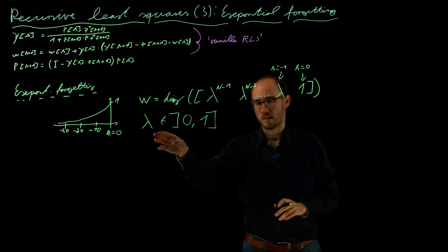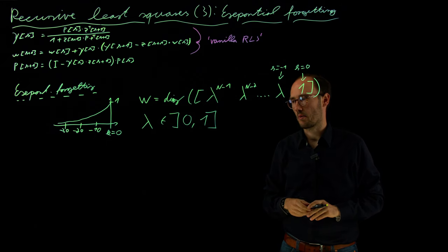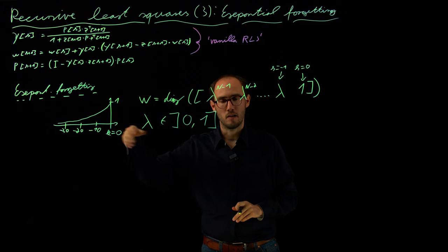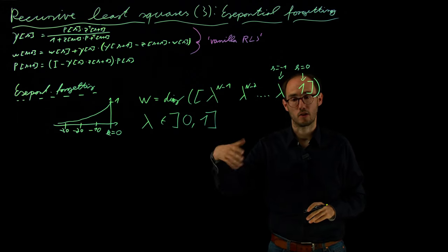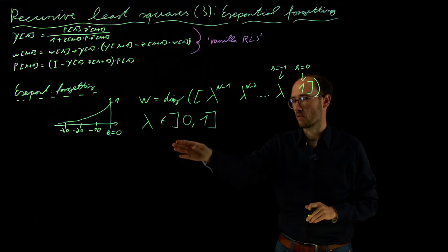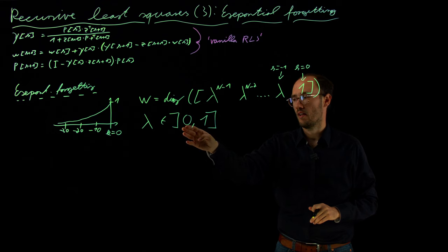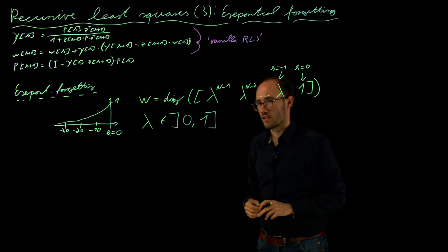And conversely, if lambda is very close to 0, that would mean that this is decaying quite quickly and that would mean that previous data samples become much more irrelevant to us, so that means that we will forget much more quickly. Okay, so lambda towards 1 means we do not forget quickly, lambda towards 0 means we forget quite quickly.